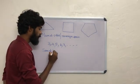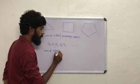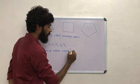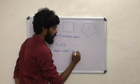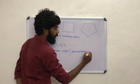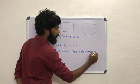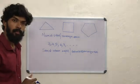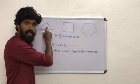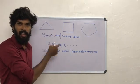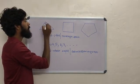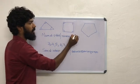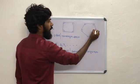Sum of interior angles — all angles. And the other one side. Here, that's the interior angles. Here: 3 angles. Here: 4 angles. Here: 5 angles.